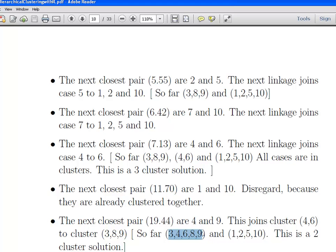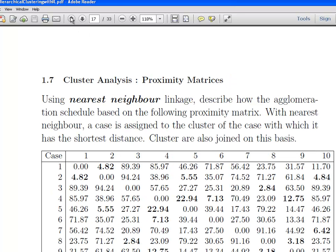That will be a 2 cluster solution: 3, 4, 6, 8 and 9, and 1, 2, 5, 7 and 10. So it's all based on this distance matrix. That was the nearest neighbor. It finds the two nearest values and adds them. If you're the nearest neighbor to one that's already in a cluster, you're added into that cluster. That is the nearest neighbor technique.